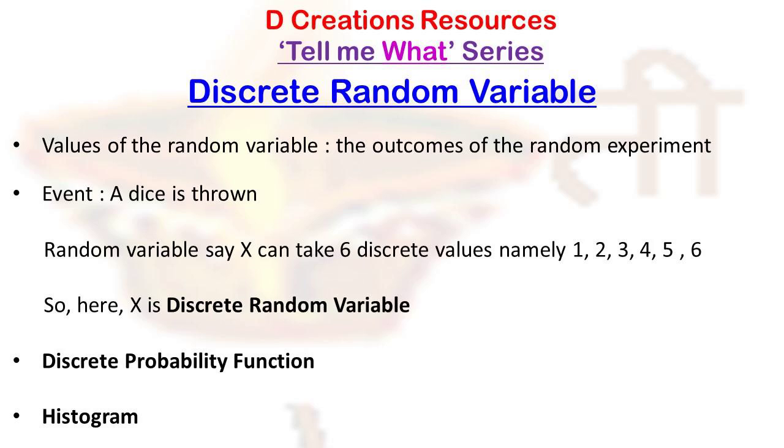The function that is associated with each value of a random variable is called a probability function. So the function that associates each value of a random variable with its probability of occurrence is basically a probability function.